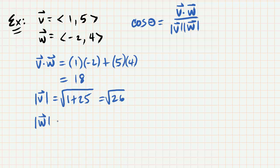The magnitude of vector w will be the square root of 4 plus 16. We square negative 2 to get 4, we square 4 to get 16. So that will be the square root of 20.